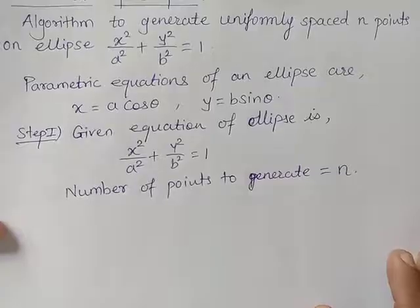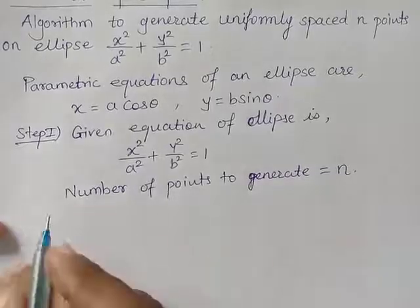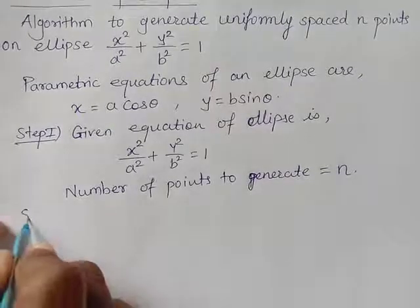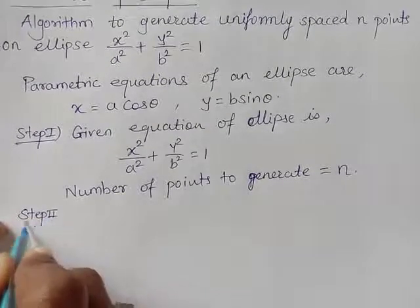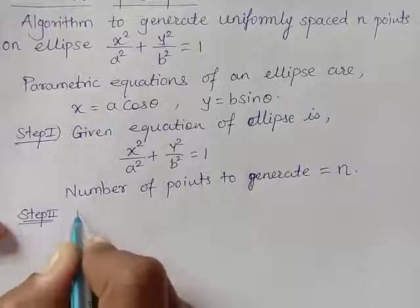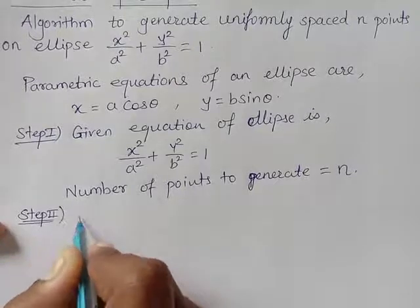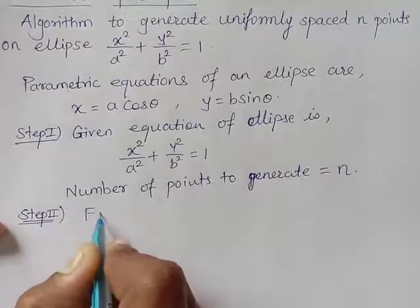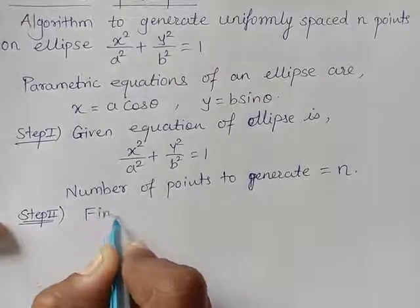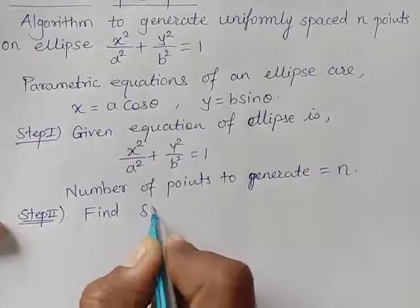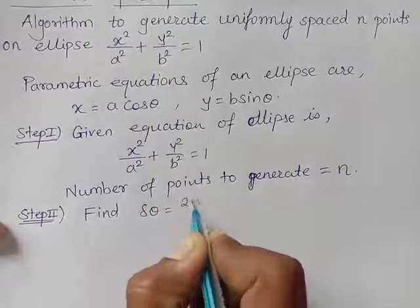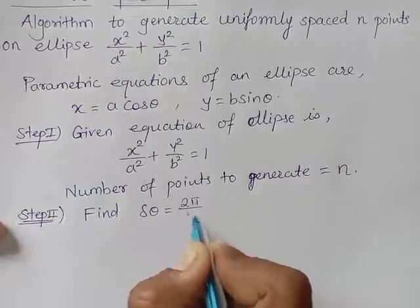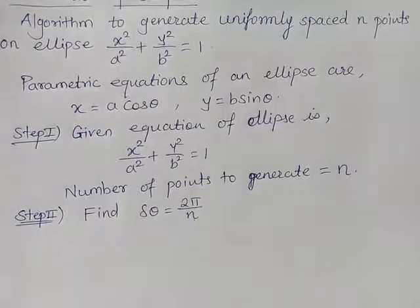Step 2: we will find delta theta, just like a circle. Here also we have to find delta theta, which is 2π by n.